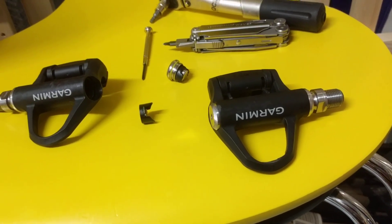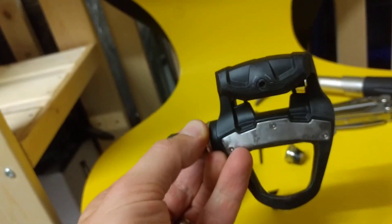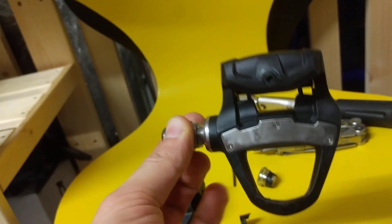Okay, these are the Garmin Vector 3s and there are two problems with them. One of them is that the pedal doesn't spin as free as it should. Some people complain about that.